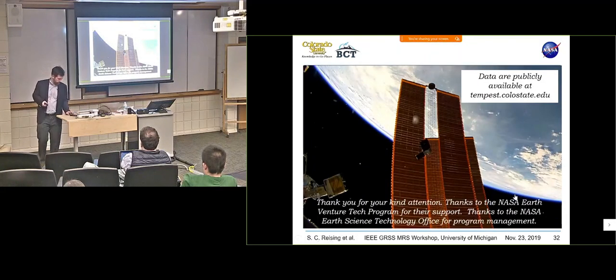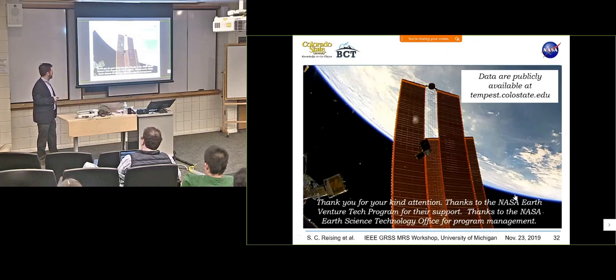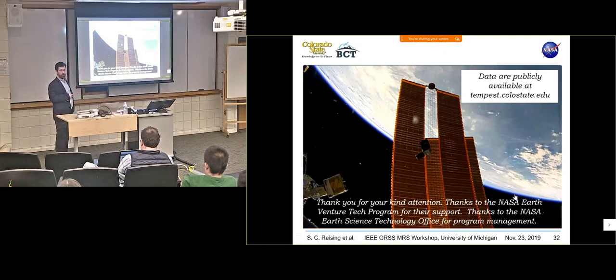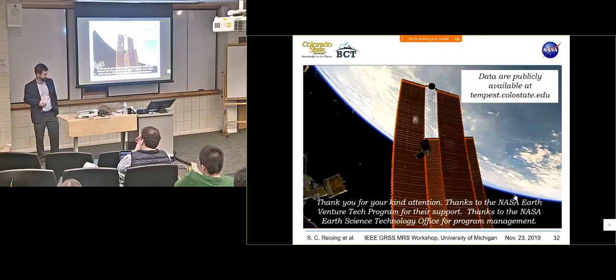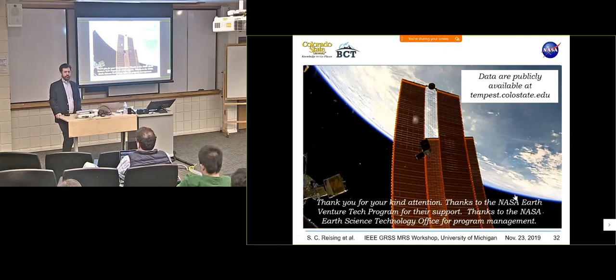The data are publicly available on the server from Colorado State, tempest.colostate.edu. Just click data and you can create an account and download the data. Take a look at them yourself. We have documentation and processing algorithms there. That's the level one data they're being downloaded from all over the world. We don't know the exact lifetime. There's one called Raven that has been on orbit for about three years. That's a different bus but operated by the same Blue Canyon Technologies.